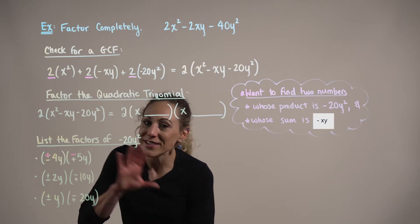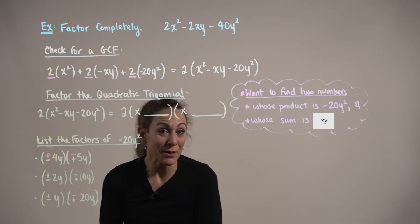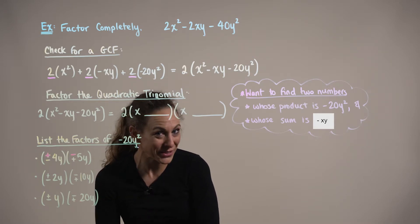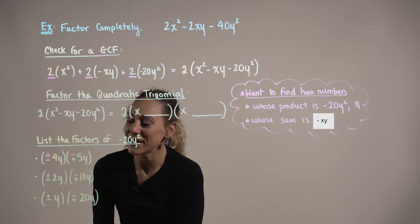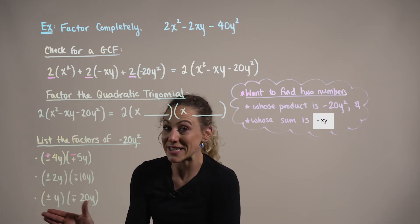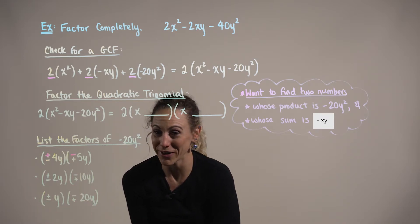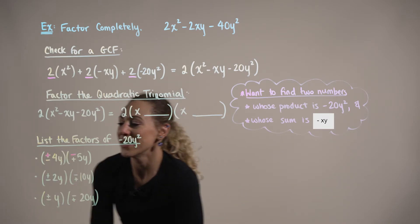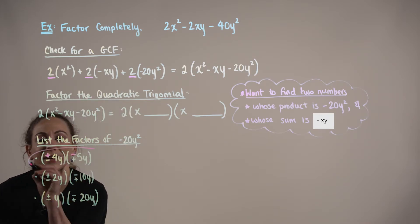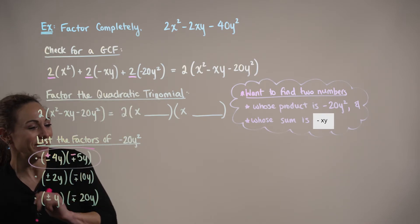So this is a strategy game. Sometimes we get lucky and we pick the right factors right away, and sometimes it takes us all the way to the end. So don't give up — just always check your work. We'll go in descending order here and start with our first group of factors.